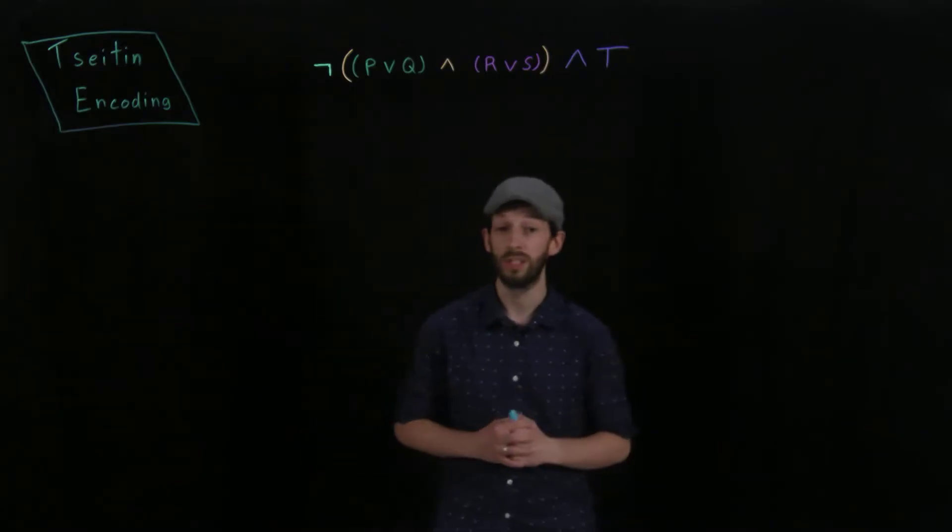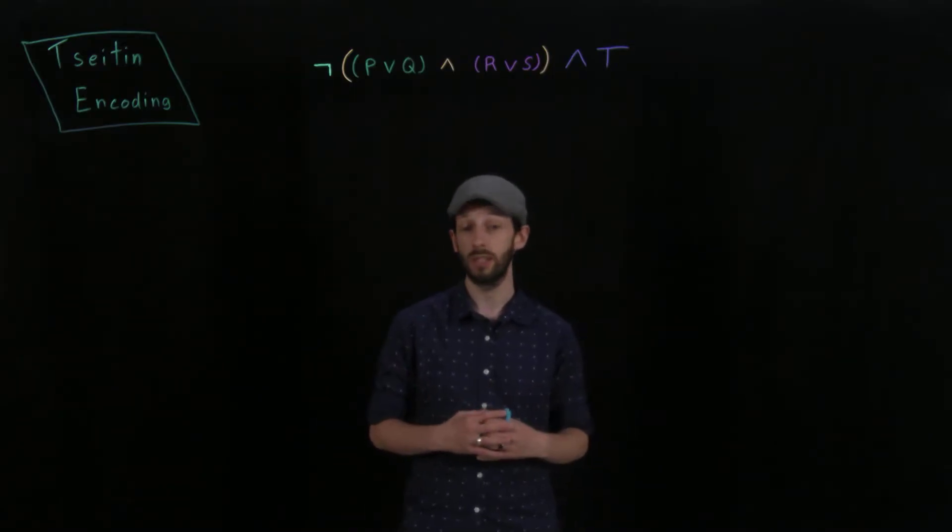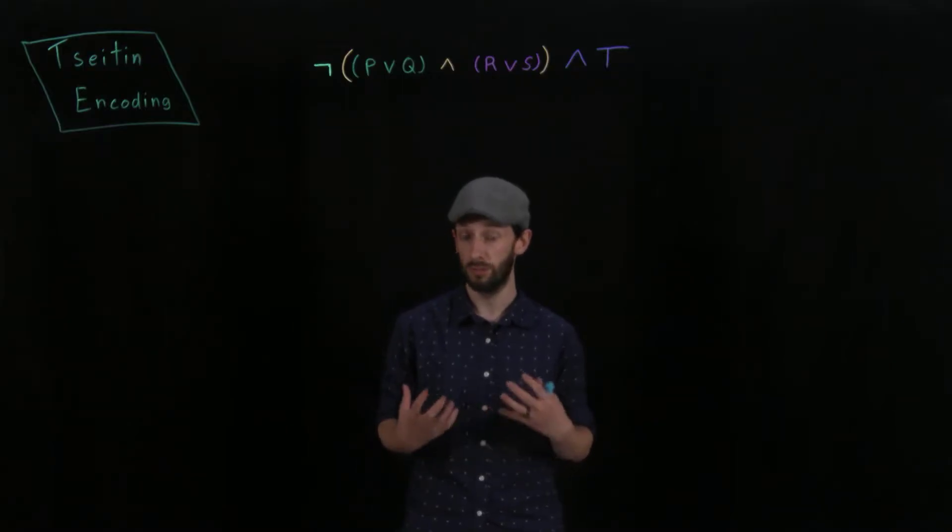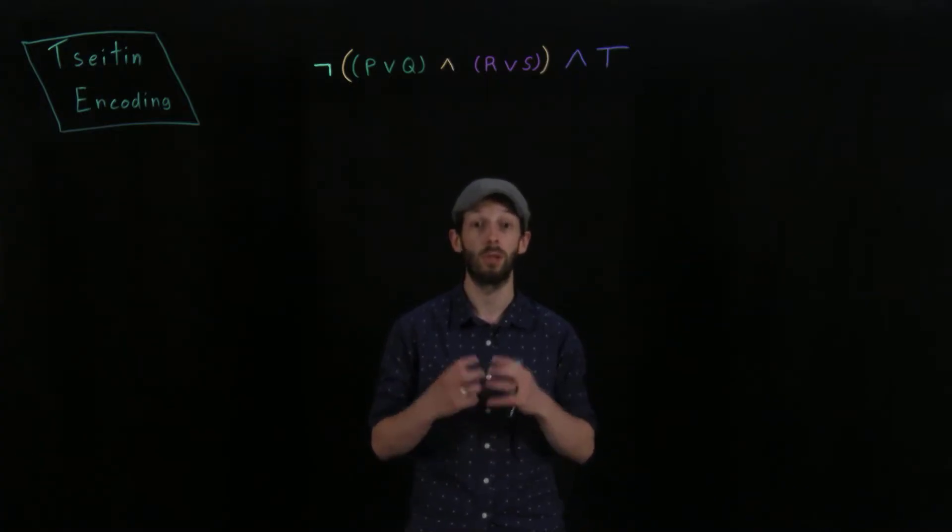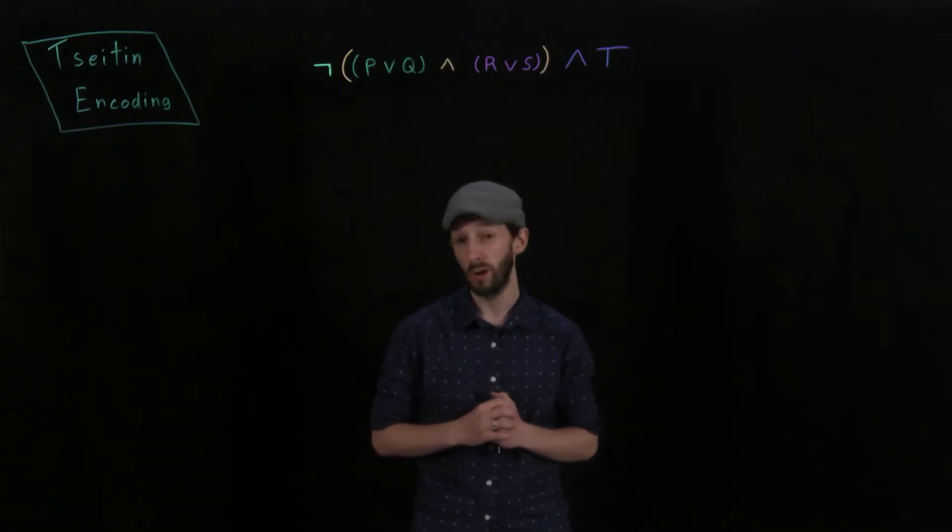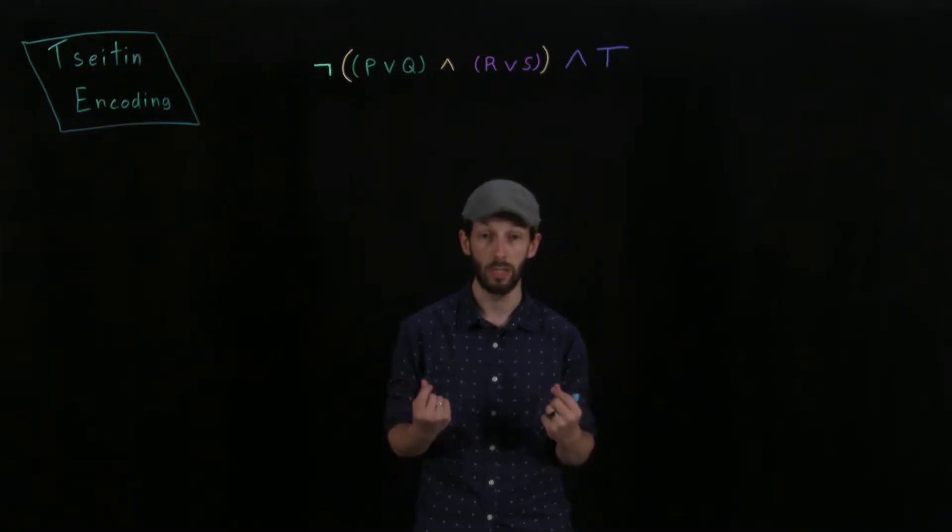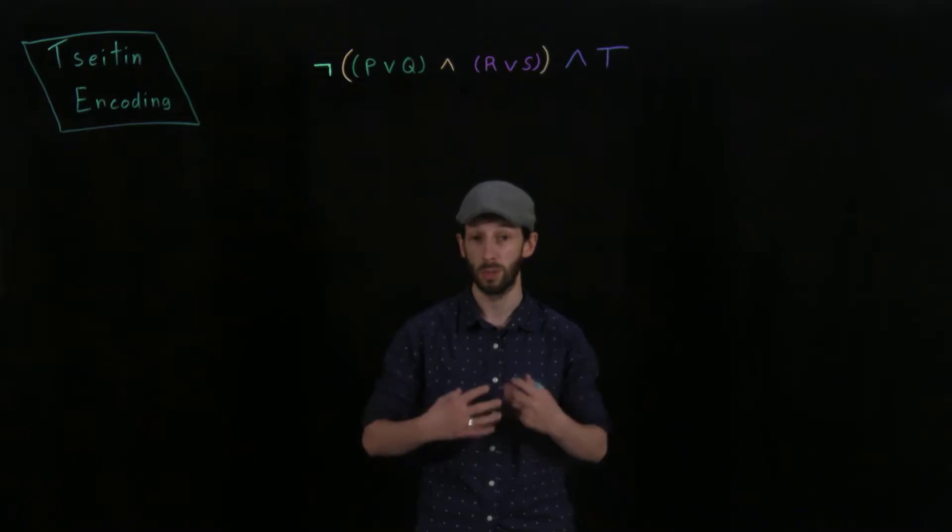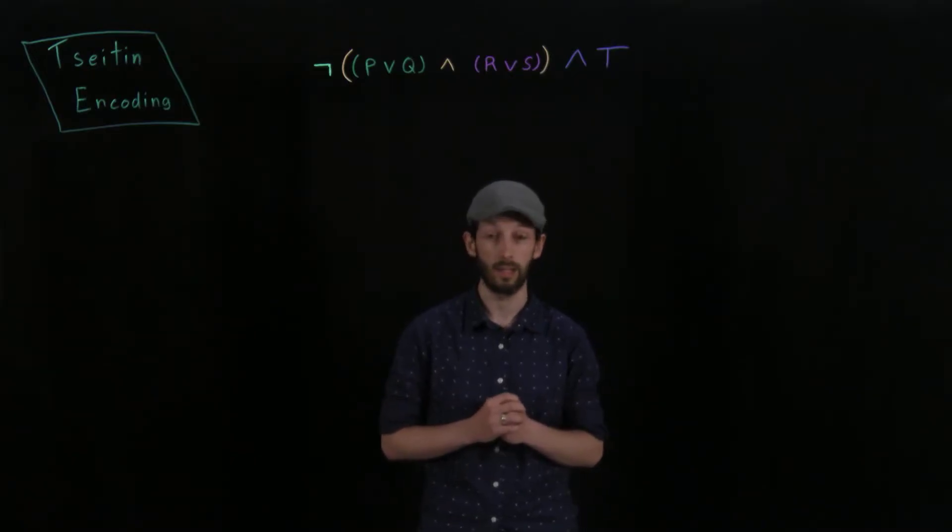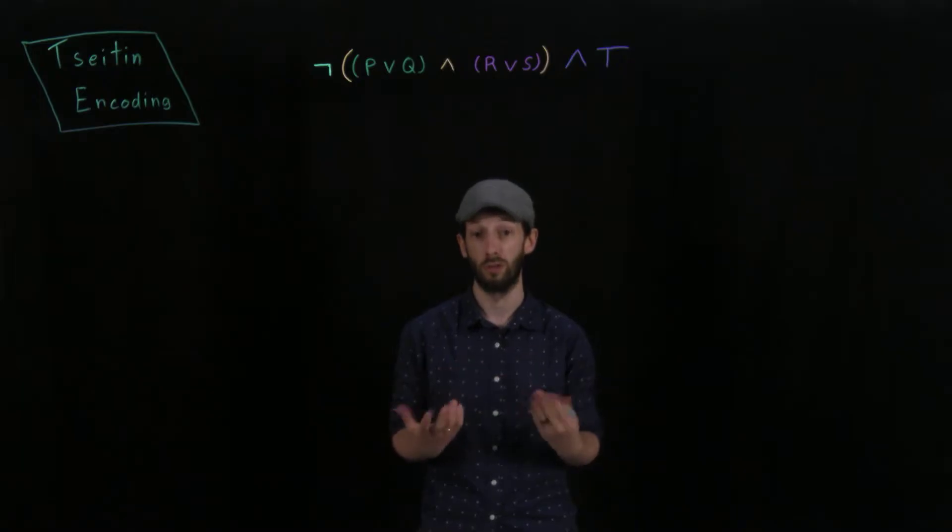Welcome back. So in this lesson, we're going to take a look at the Tseitin encoding. Now, this is a technique that allows us to go from an arbitrary Boolean formula, a propositional formula like the one we have above, and convert it into conjunctive normal form, but do so without an explosion in the space that it's required. You've already seen a technique to convert an arbitrary propositional formula to conjunctive normal form by doing De Morgan's rules and distribution rules and repeating this process until you arrive at a CNF. This is a different technique that uses the introduction of auxiliary variables, which we saw in the last lesson, in order to create a conjunctive normal form that's linear in size of your original formula.